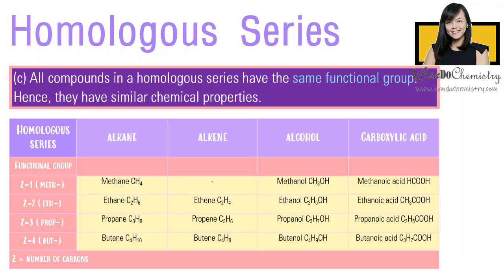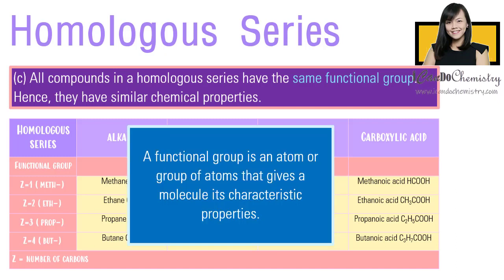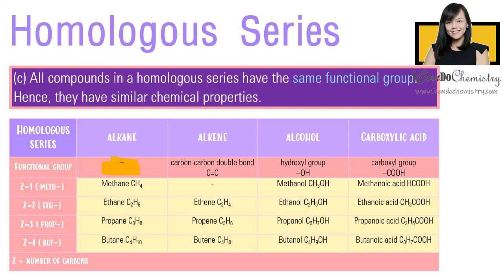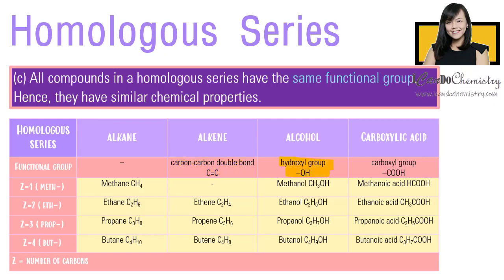Part C: all compounds in a homologous series have the same functional group, hence they have similar chemical properties. A functional group is an atom or a group of atoms that gives a molecule its characteristic properties — basically the group of atoms that take part in the chemical reaction. The functional group is the same for all members in the same homologous series. Alkanes do not have a functional group and are generally unreactive except in combustion and substitution reactions. The functional group of alkene is the carbon-carbon double bond, and alkenes are very reactive. The functional group of alcohol is the hydroxyl group, and the functional group of carboxylic acid is the carboxyl group.